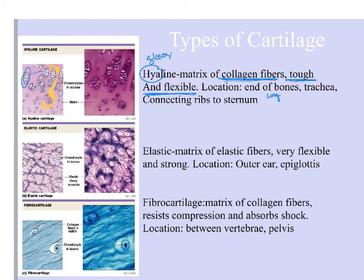Now let's look at elastic cartilage. As the name implies, elastic cartilage has not collagen fibers but elastic fibers. Elastic fibers aren't as strong as collagen fibers, but they are stretchy — you can pull on them like rubber bands and when you let go they return to their original resting shape. So elastic cartilage is much more flexible than hyaline cartilage, though it's still strong. You find elastic cartilage in your outer ear, where you tug on your earlobe, and also on the epiglottis — a little lid that covers your trachea while you're swallowing food and drink.